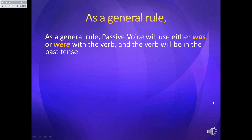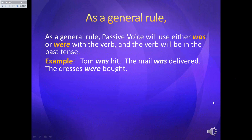You might wonder why we're even talking about this, because both active and passive are correct — and that's true. But we have to know that the College Board does not like passive voice; they think it's not quite as good. You have to learn to recognize it. Most of the time, passive voice uses the verb was or were, but it doesn't have to. For example: Tom was hit. The mail was discovered. The dresses were bought. In all of those, the subjects are receiving the action.